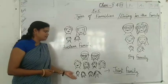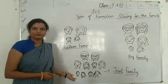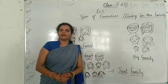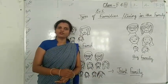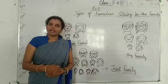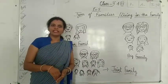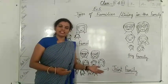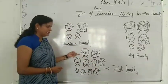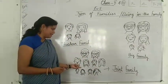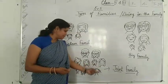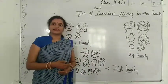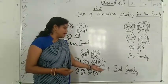Now, students, what is a joint family? A joint family consists of two or more families in a blood relation living together. It includes grandparents, parents, uncles and aunts, and their children all living in the same house.